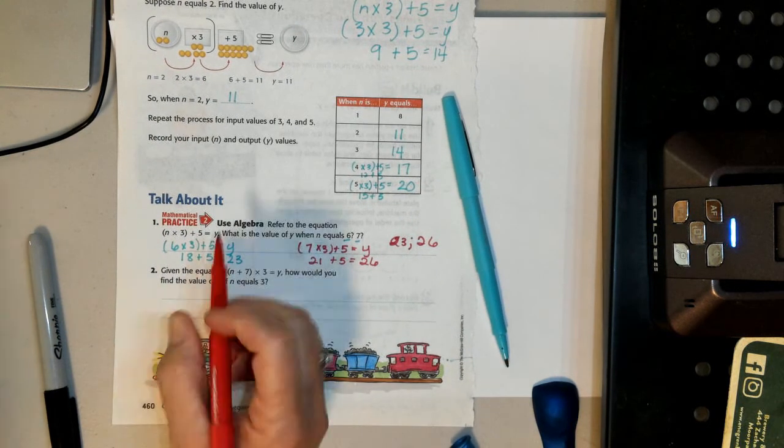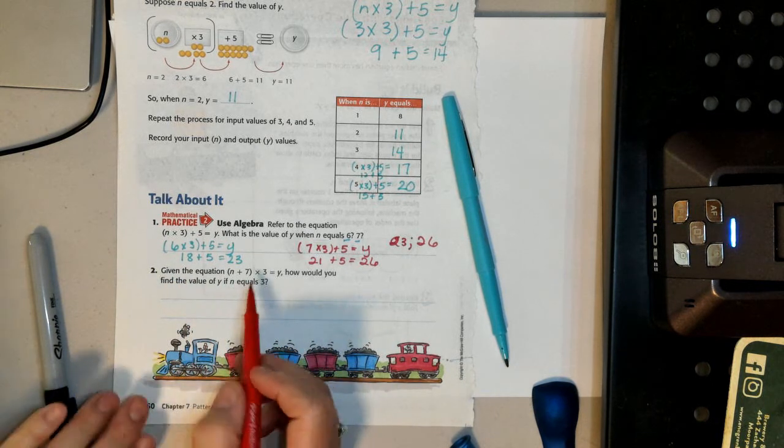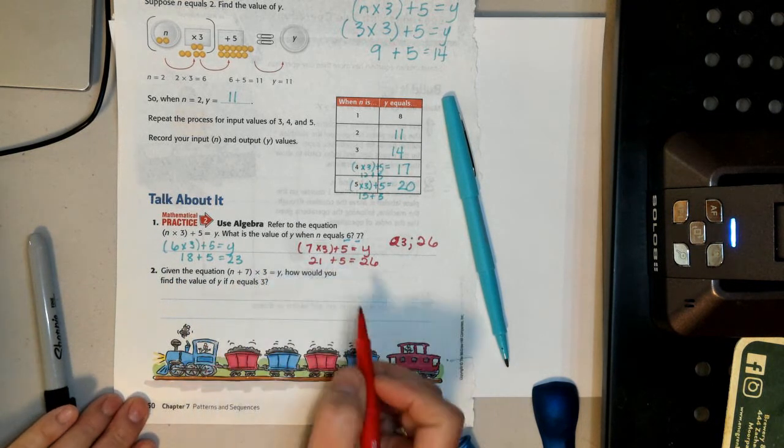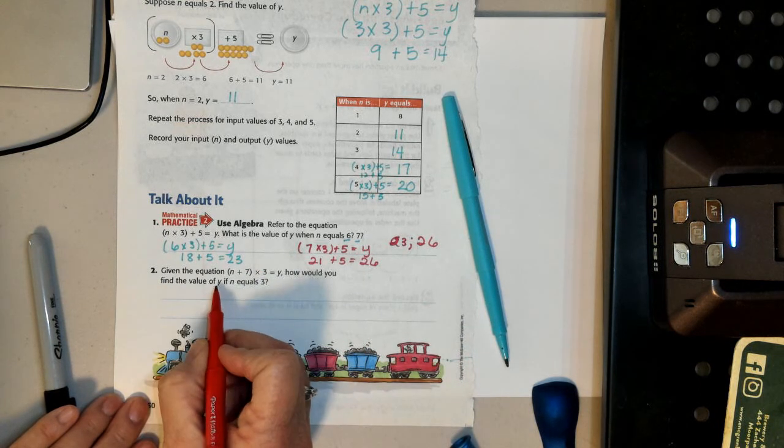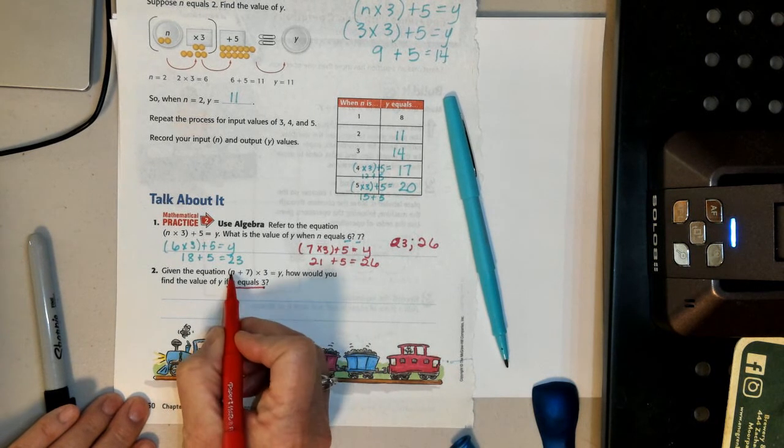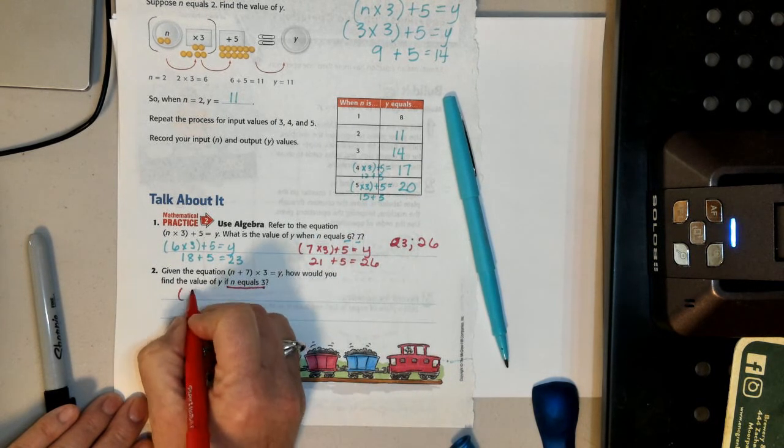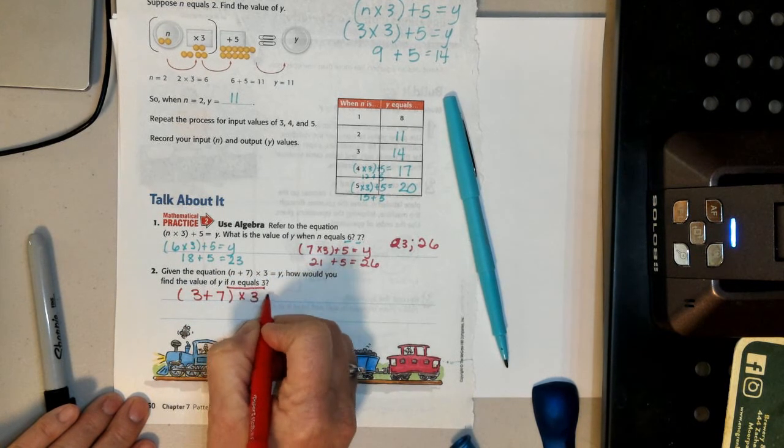And you would do the same thing here. This is a different equation. n plus 7 times 3 equals y. Find the value of y when n equals 3. So we're going to put a 3 in here. So it's going to be 3 plus 7 times 3 equals y.